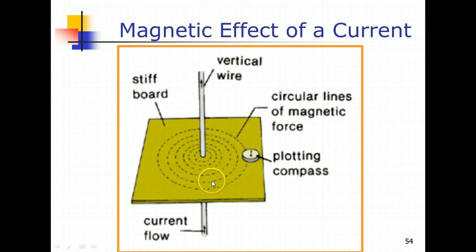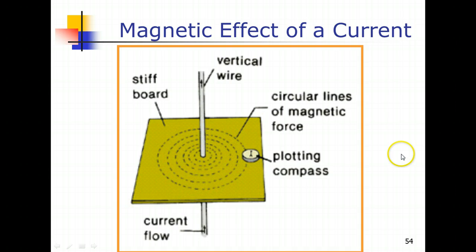For a vertical wire carrying an electrical current, the pattern of the magnetic field created around it consists of concentric circles. For O-level purposes, you are sometimes required to actually draw the pattern of this magnetic field around a vertical wire, so take note of that. The second question is: once I've determined the shape and pattern of the magnetic field, what would be the direction of the magnetic field lines?